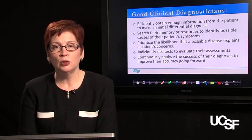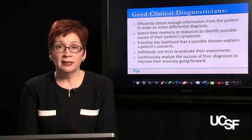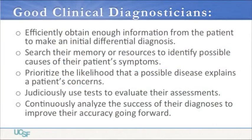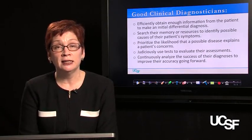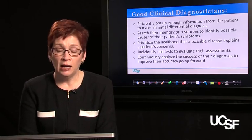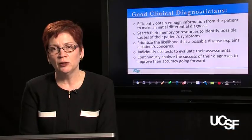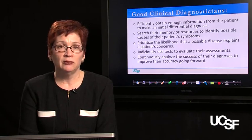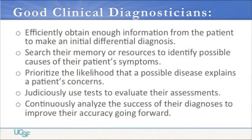Good clinical diagnosticians — those who are expert in their field — know how to efficiently obtain enough information from the patient to make an initial differential diagnosis, and this must happen fairly expeditiously. They know how to search their memory or resources to identify possible causes of the patient's symptoms. Importantly, we will teach you how to prioritize the likelihood that a possible disease explains a patient's concerns, rather than generating a laundry list of possible diseases and testing progressively — which is expensive, wasteful of time, and often ineffective. We want you to judiciously use tests and continuously revisit the patient's symptoms as you gather more information.